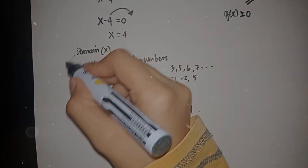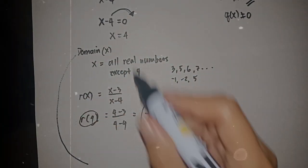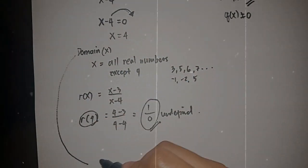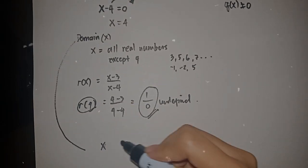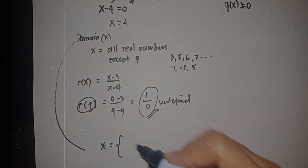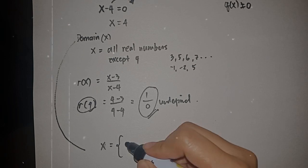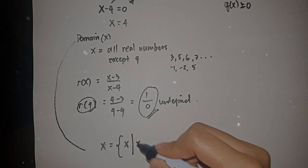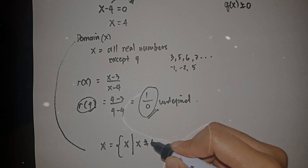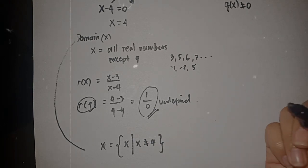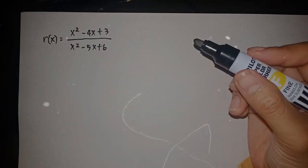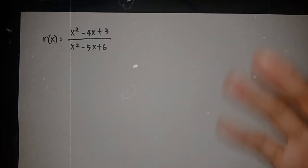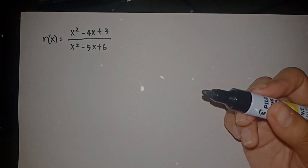So our domain, x, is all numbers except 4. We can also rewrite this in set builder notation: x such that x is all set of real numbers except positive 4. Now let's try the second, more complex example and identify the restriction.